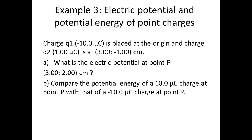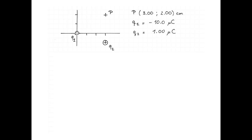What is the electric potential at point P, which is at 3, 2 centimeters, and compare the potential energy of a 10 microcoulomb charge at point P with that of a negative 10 microcoulomb charge at point P. So I've drawn my diagram with Q1 and Q2 and point P.